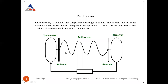Looking at the diagram, we have antennas on both sides. At the transmitter side, signals are transmitted; at the receiver side, an antenna receives those signals through the air. Examples shown include FM radios and tape recorders. Cars have antennas placed on top to capture signals at a particular frequency. Cell phones today have built-in antennas. Antennas are required on both sides to send and receive signals. This covers radio waves.